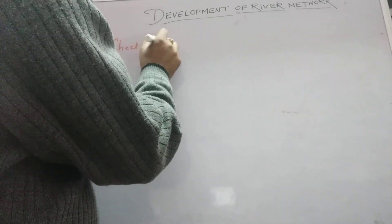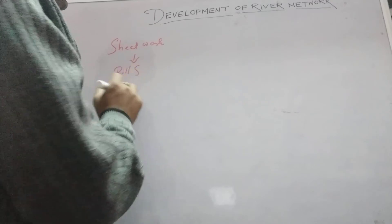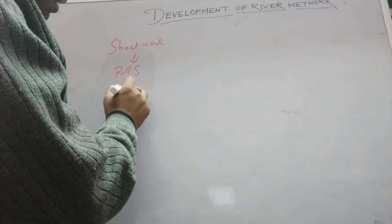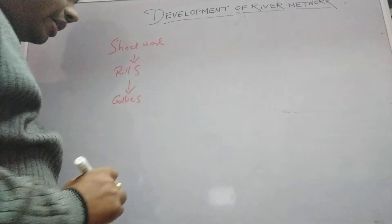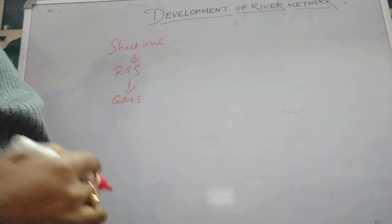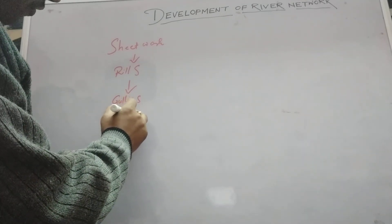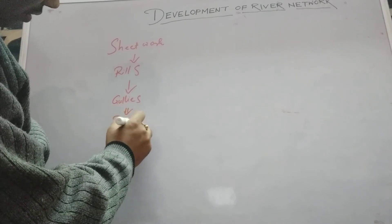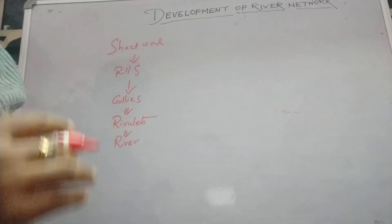Basically, when rainfall occurs, the rainwater flows down the slope as sheet wash. After a certain period of time, they form rills. When the neighboring rills are joined together they form gullies, and after the deepening and down-cutting of the slope, with the river water, they form rivulets. The joining of rivulets then forms the river.